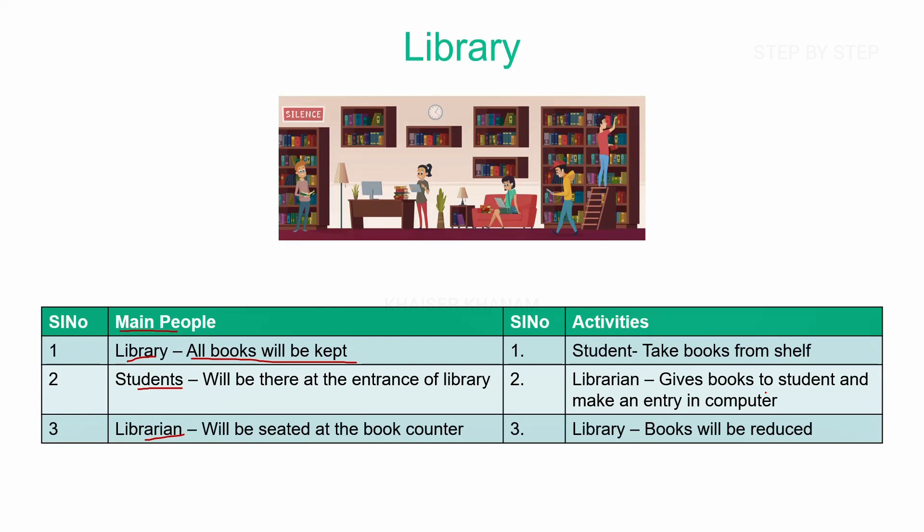So in the library, the number of books present is total books minus one, because one book has been given to the student. Now if the student wants to return the book, they can come to the librarian again, edit the entry in the computer, and my library will become the total I was having plus one book. So these are the basic things that will happen inside the library, and based on the student and librarian activities, the books will be reduced or increased inside the library.